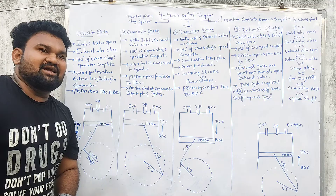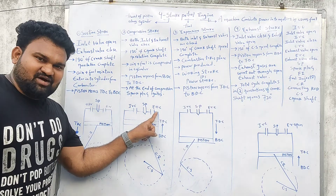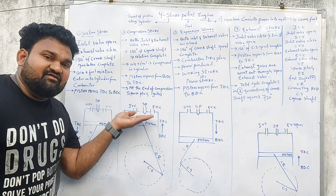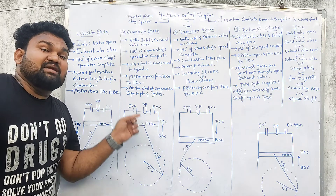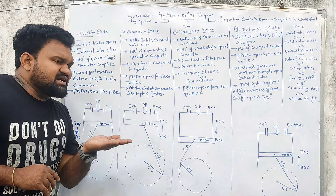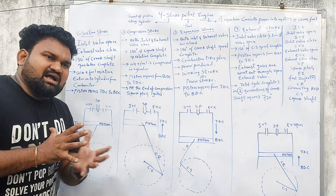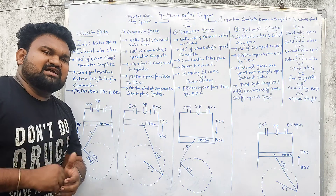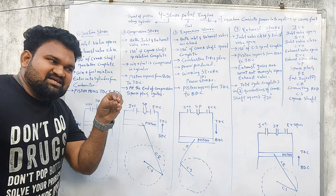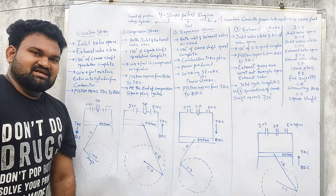Both the inlet valve and the exhaust valve are closed. The crankshaft completes another half revolution. The piston moves from bottom dead center to top dead center. The air plus fuel mixture is compressed. At the end of the compression stroke, the spark plug ignites. The second stroke is complete.